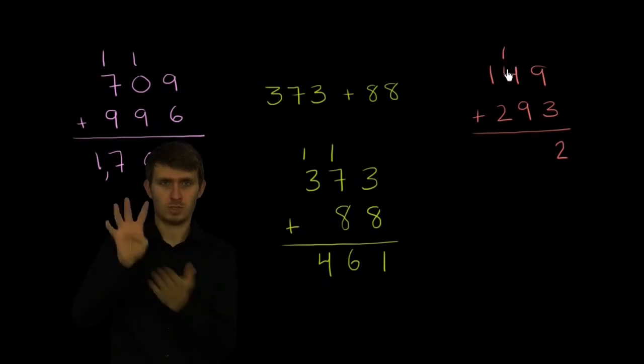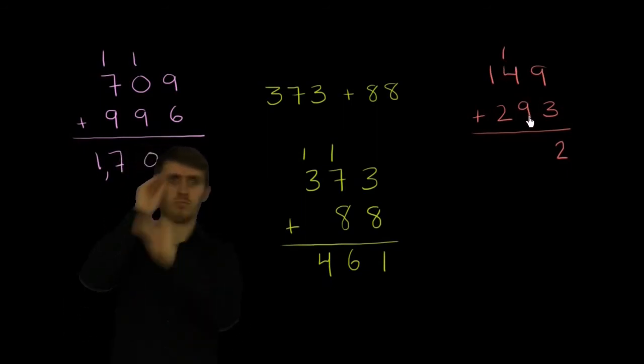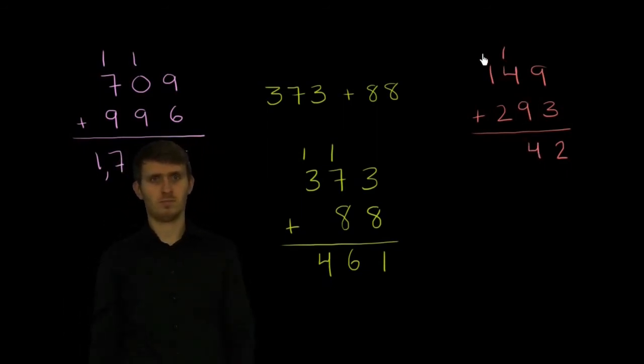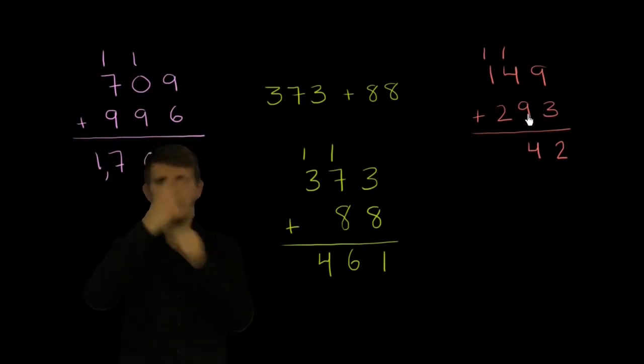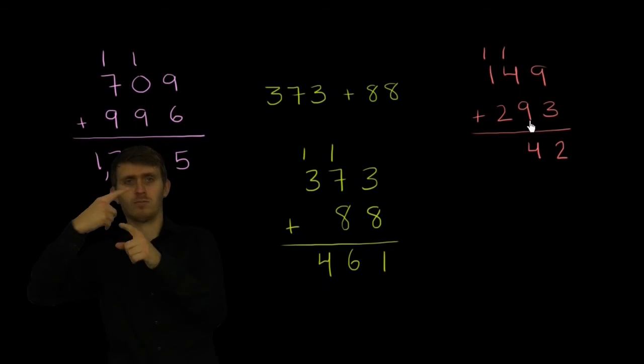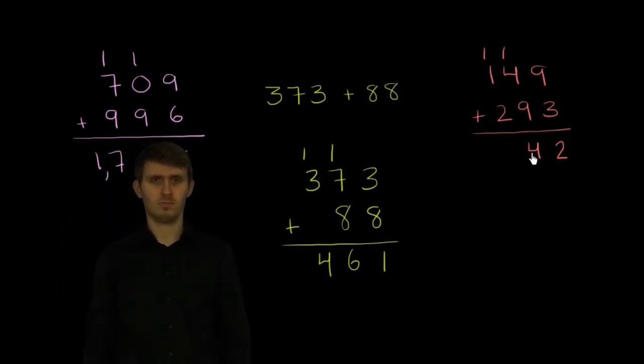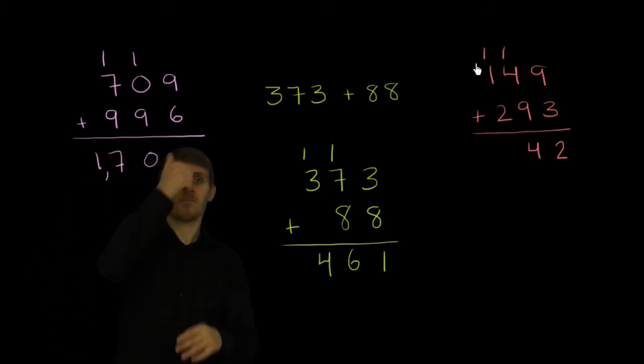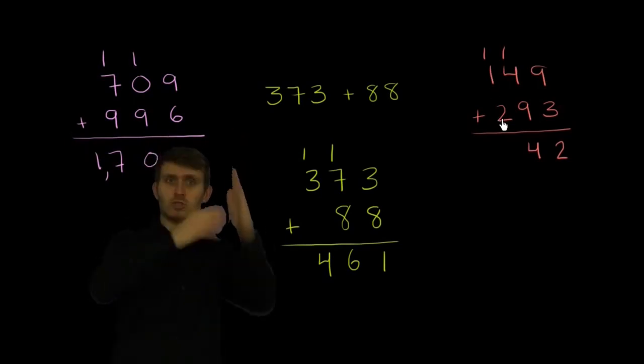Now in the tens place, 1 plus 4 plus 9 is 14. So we write the 4, carry the 1. But remind ourselves, this is actually 10 plus 40 plus 90, which is 140, which is the same thing as 40 plus 100. And then 1 plus 1 plus 2 is 4.